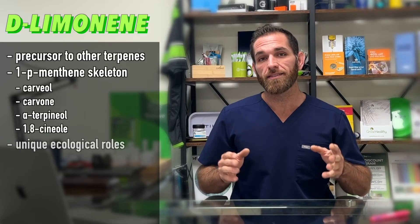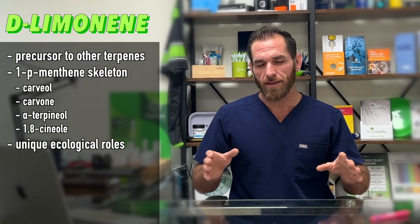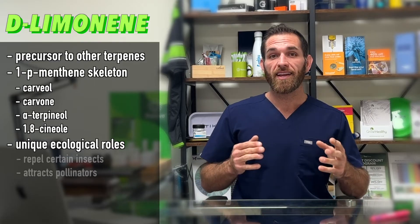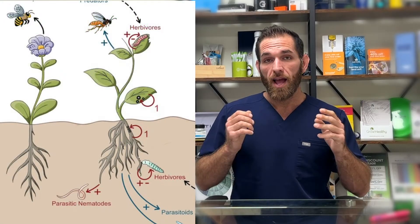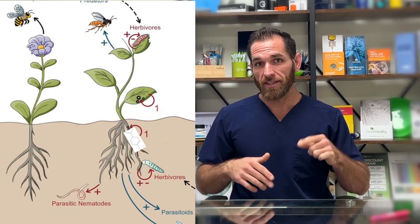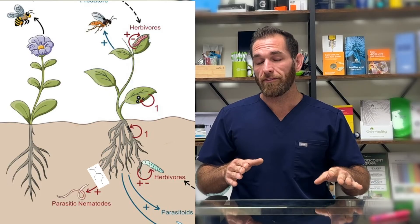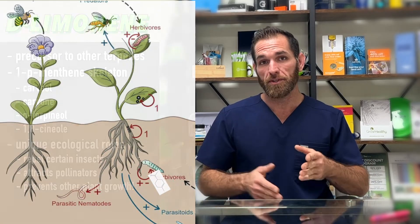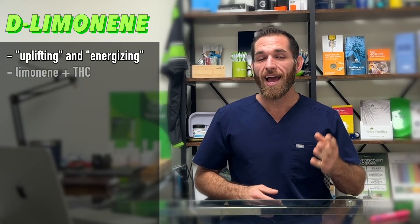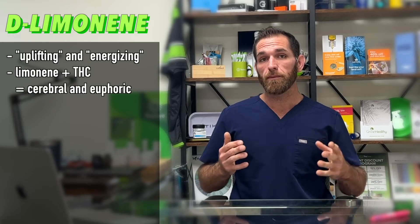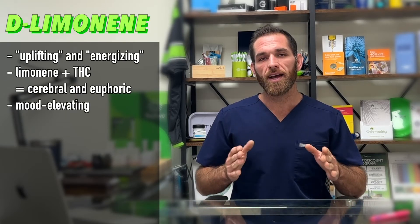Limonene also has some unique ecological roles. It can attract or repel insects or pollinators when present in the headspace near flowers. However, when plants exude limonene through underground structures in the soil, it actually slows down and even prevents the growth of other plant species nearby. I do call limonene the happy terpene — it's been known to provide uplifting and energizing effects, a refreshed feeling of happiness, and anecdotal reports suggest adding limonene to THC enhances a more cerebral and euphoric experience.